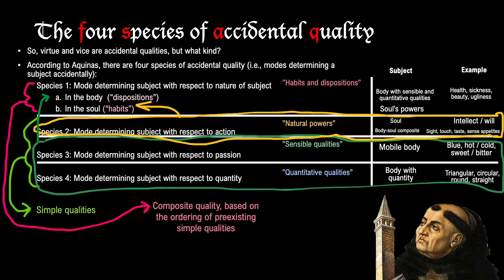Besides dispositions, which are qualities in the first species in the body and based on the third and fourth species of quality, there are also habits which are in the soul and based on the second species of quality — the natural powers. These have for their subject the soul's powers. Examples of habits — qualities in the first species based on the natural powers of the soul — are virtue and vice.